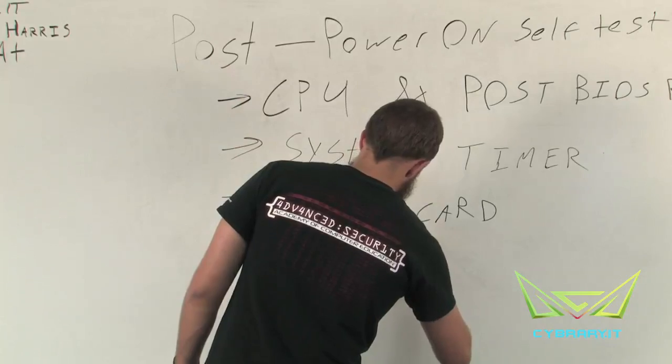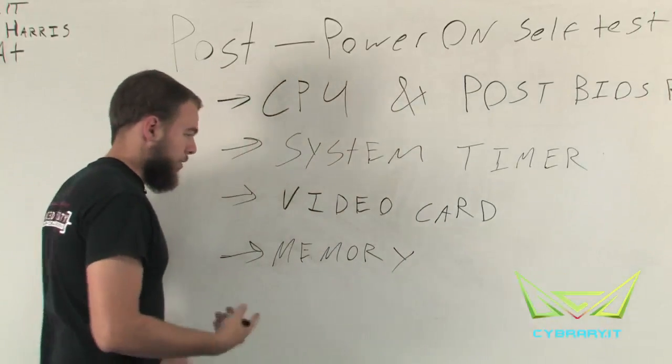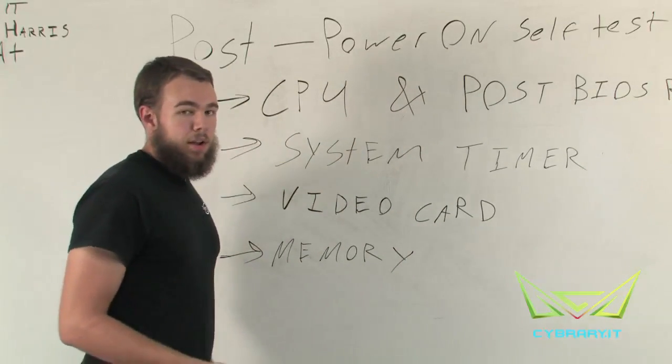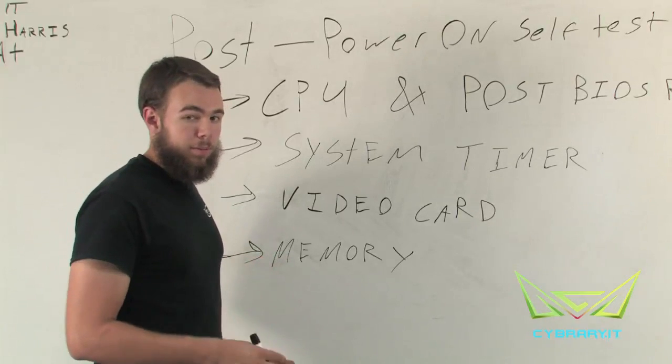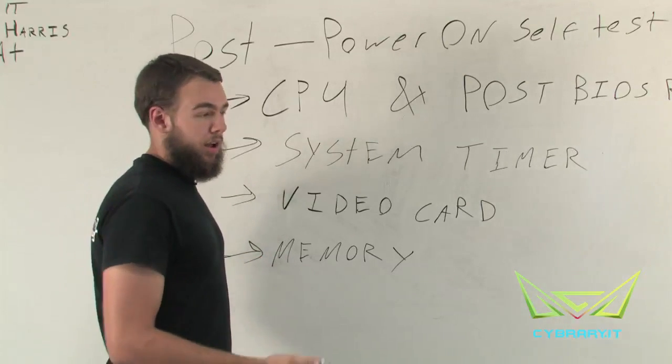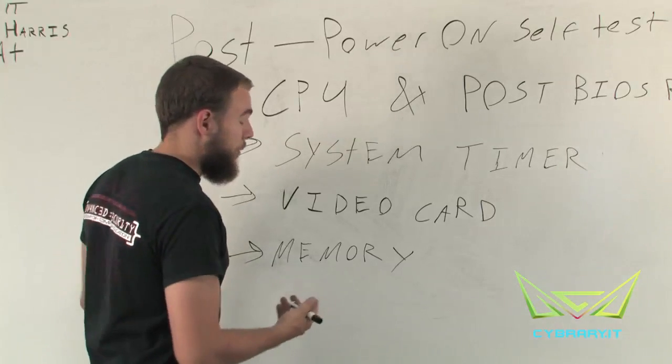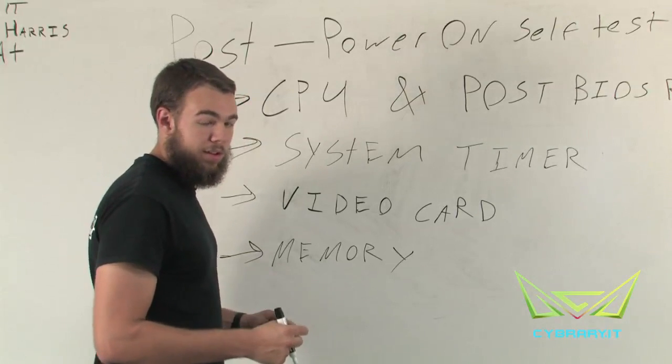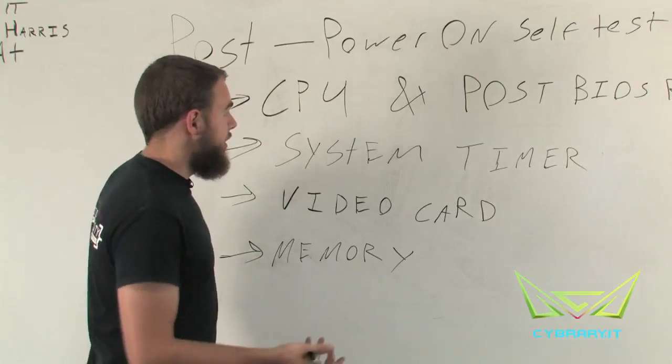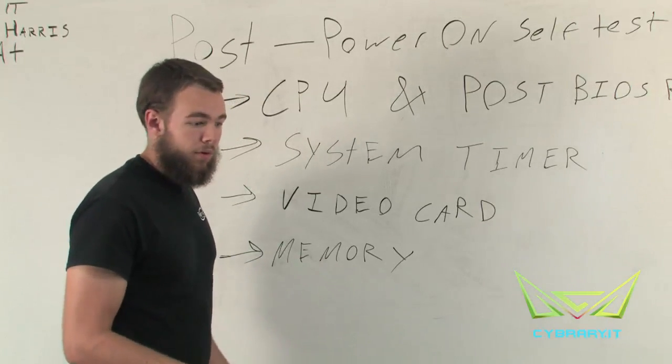Next, we will actually have our memory. Our memory, also known as our RAM, is what allows our computer to temporarily hold information so it can process the set of instructions. And if our memory is bad or if, say, our memory isn't seated properly, then this is where we'll get the error and this is where it'll fail.